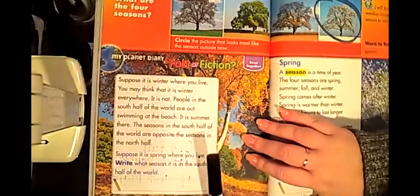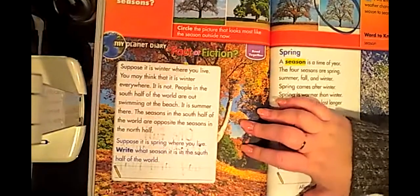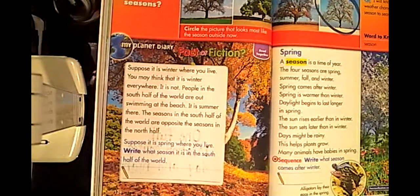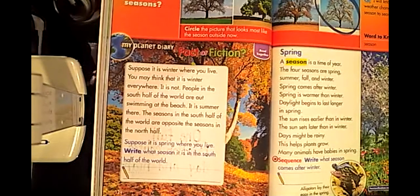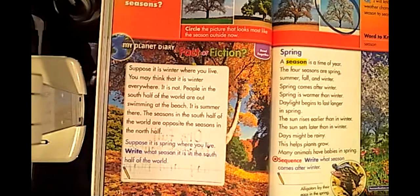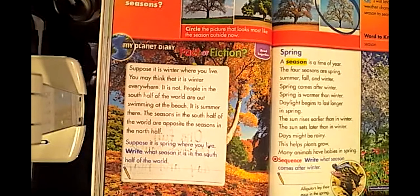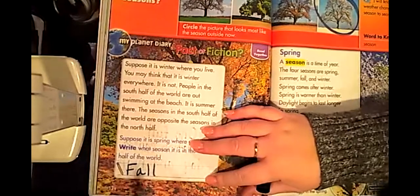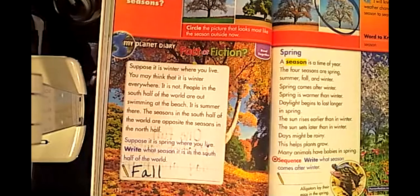My Planet Diary fact or fiction. Suppose it's winter where you live. You may think that it is winter everywhere, but it is not. People in the south half of the world are out swimming at the beach — it is summer there. The seasons in the south half of the world are the opposite of the seasons in the north half. We live in the United States of America, which is in the north part of the world. So if we have spring, they have the other transitional season, which would be fall. Some people call it autumn — they're the same.